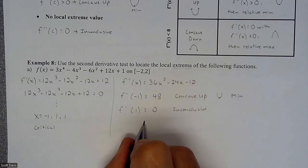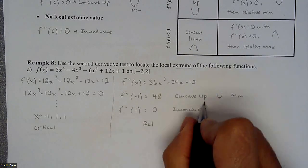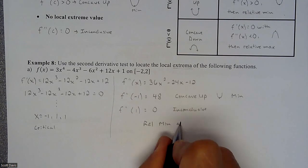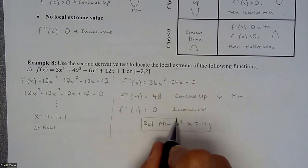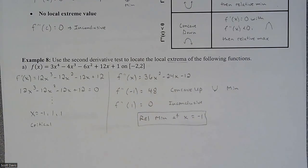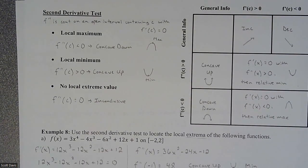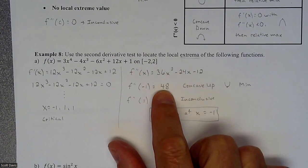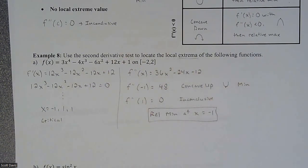Because that zero result is actually an inflection point, which is not a max or a min, so it doesn't give us useful information. So we have a relative min at x equals negative one. That is the second derivative test: take the critical numbers from the first derivative, plug them into the second derivative, determine whether it's concave up or concave down, and that tells you whether you have a max or a min at that point.